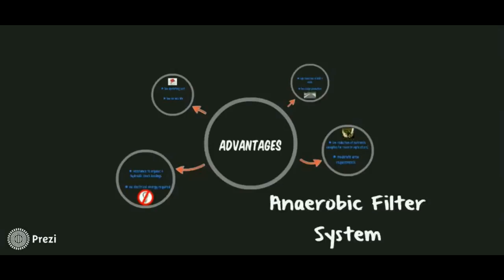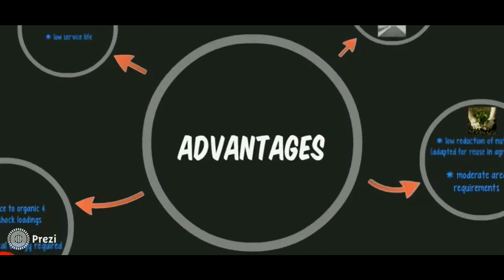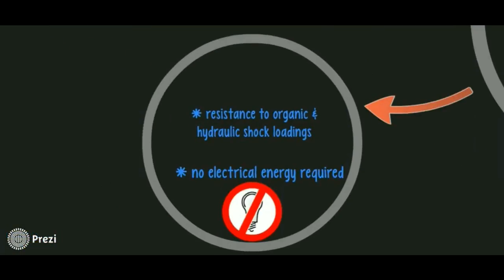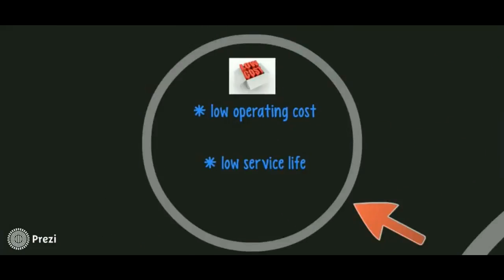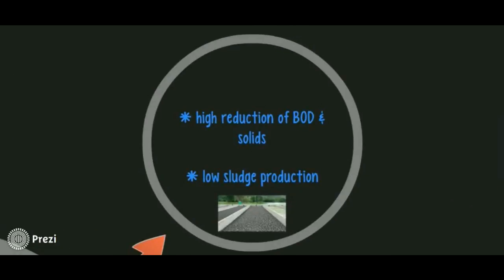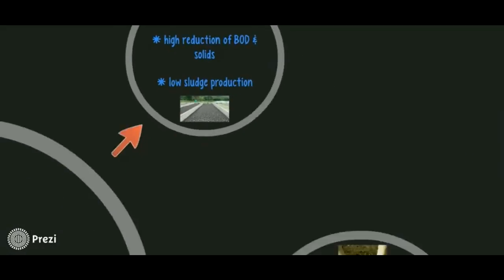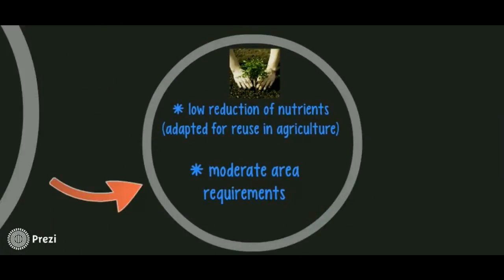Anaerobic filter system advantages: firstly, resistance to organic and hydraulic shock loading; no electrical energy required; low operating cost and long service life; high reduction of bottom solids and low sludge production; low reduction of nutrients which is suited for reuse in agriculture; and lastly, moderate area requirements.